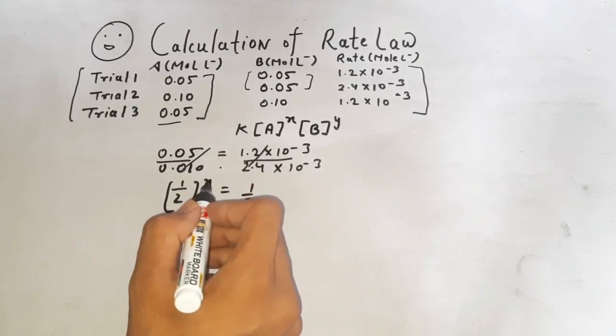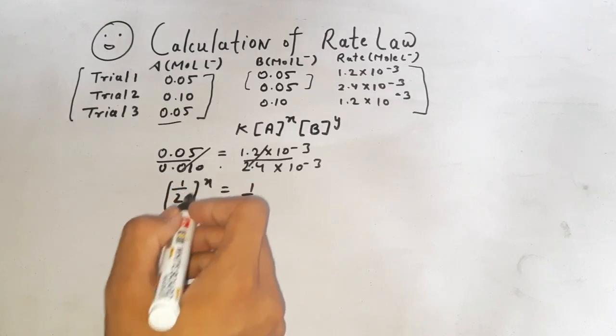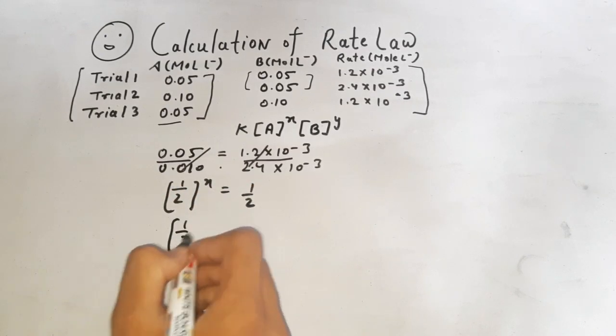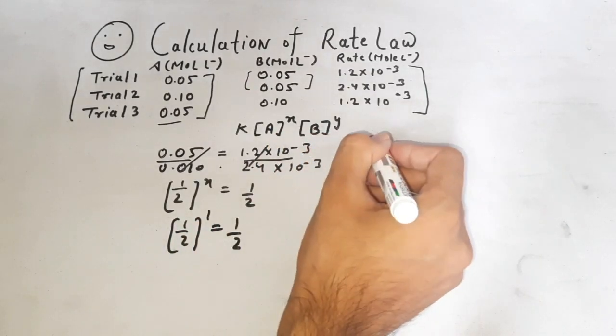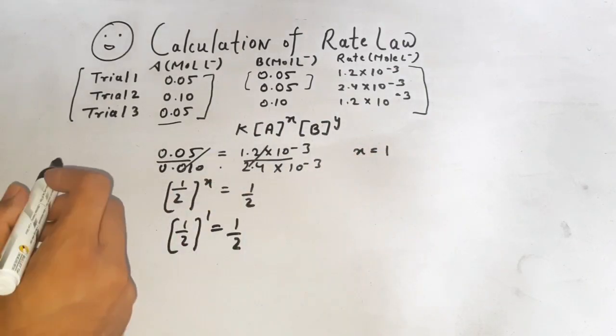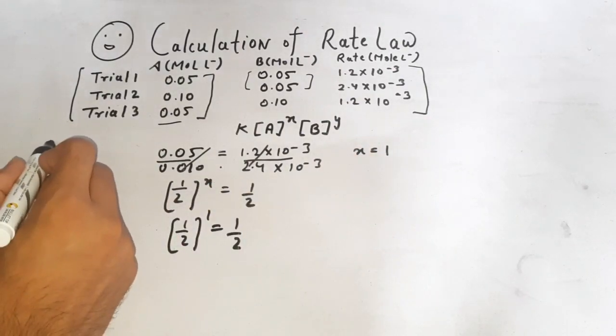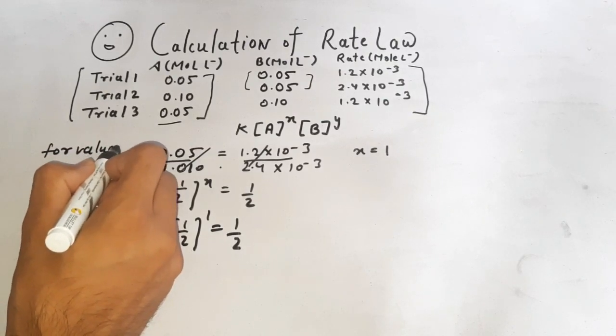Then we take the value of x. The answer is 1 by 2, then the value of x equals to 1 over 1 by 2. Now the value of x comes 1.